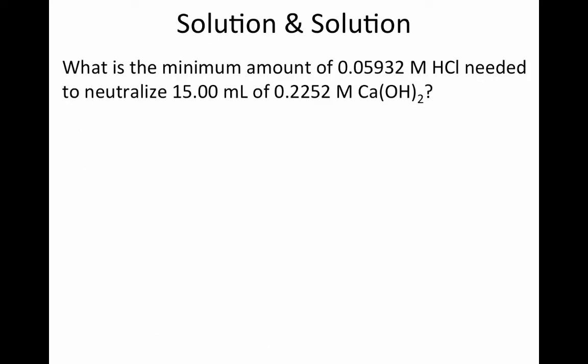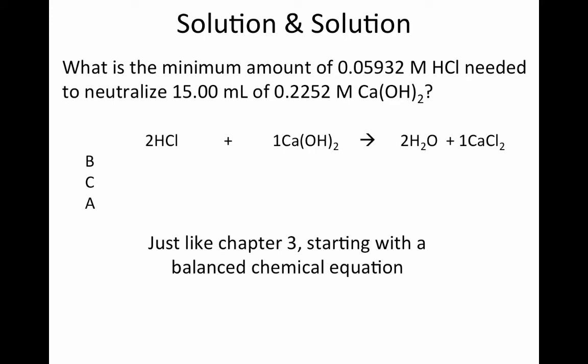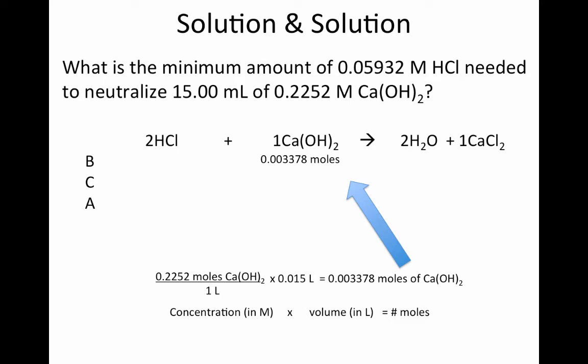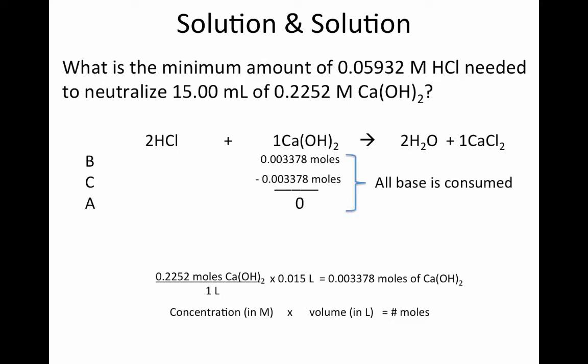Let's see how that applies in this question: What is the minimum amount of a HCl solution needed to neutralize a calcium hydroxide solution? This is an acid-base reaction, so let's start with a balanced equation and summarize what happens within our BCA table. Within the balanced neutralization reaction, notice it takes 2 moles of HCl to react with 1 mole of calcium hydroxide. We have the concentration and volume of calcium hydroxide, so we can determine the number of moles initially present. It's going to be neutralized, meaning all of it is consumed in the reaction.